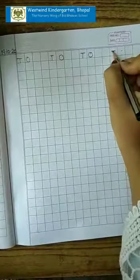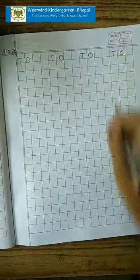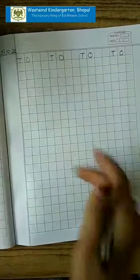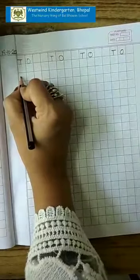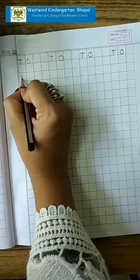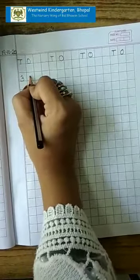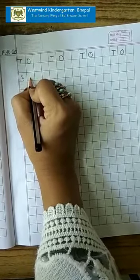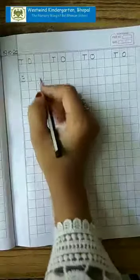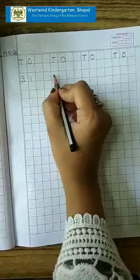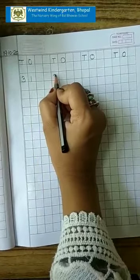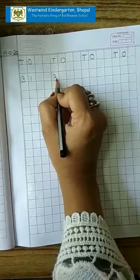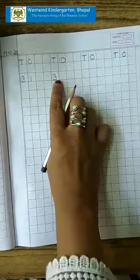Again, we will leave two boxes and we will make T and O. Again, leaving two boxes, we will make T and O like this. Okay, now from here we are going to make number 3. 3 and here starting from the middle of the box goes till bottom line, we will make 1.